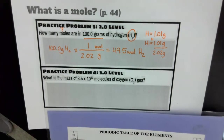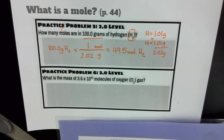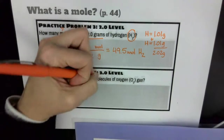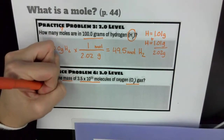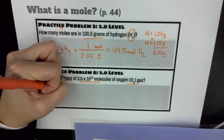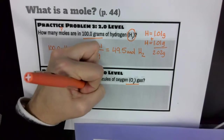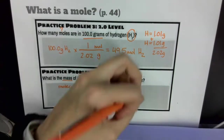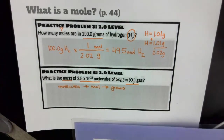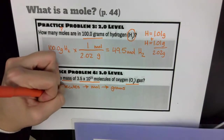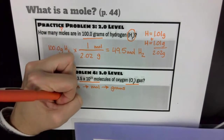Now this last one, question number four, is a 3.0 problem, so it has a little bit more involved. It says: what is the mass of 3.5 times 10 to the 23rd molecules of oxygen gas? This is going to take two steps. I'm going to convert molecules to moles — moles are always in the middle — and then convert moles to mass in grams. My starting value is 3.5 times 10 to the 23rd molecules, abbreviated as 'cules.'